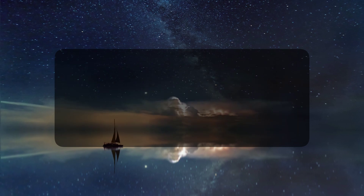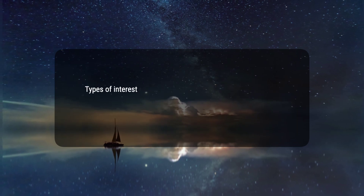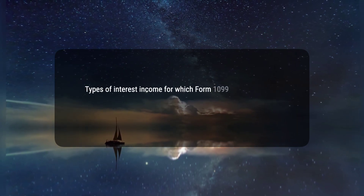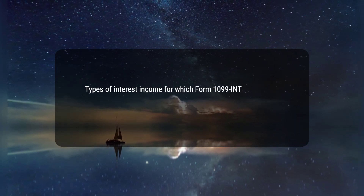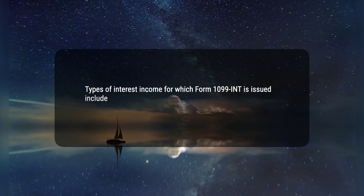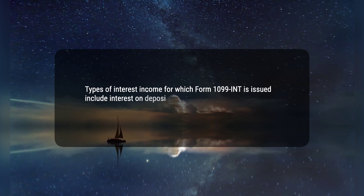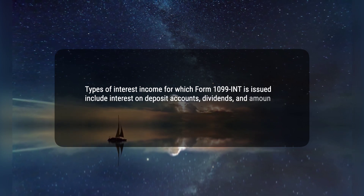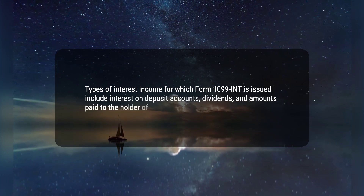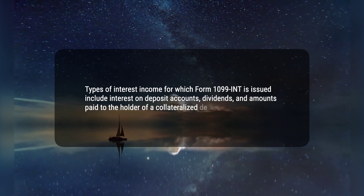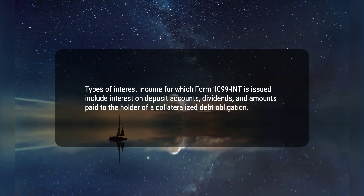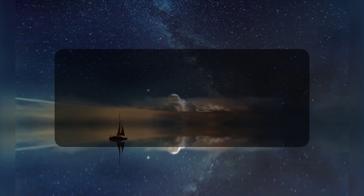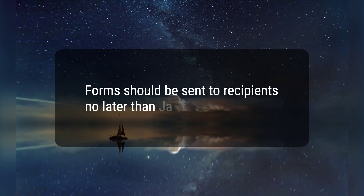4. Types of interest income for which Form 1099-INT is issued include interest on deposit accounts, dividends, and amounts paid to the holder of a collateralized debt obligation. 5. Forms should be sent to recipients no later than January 31.